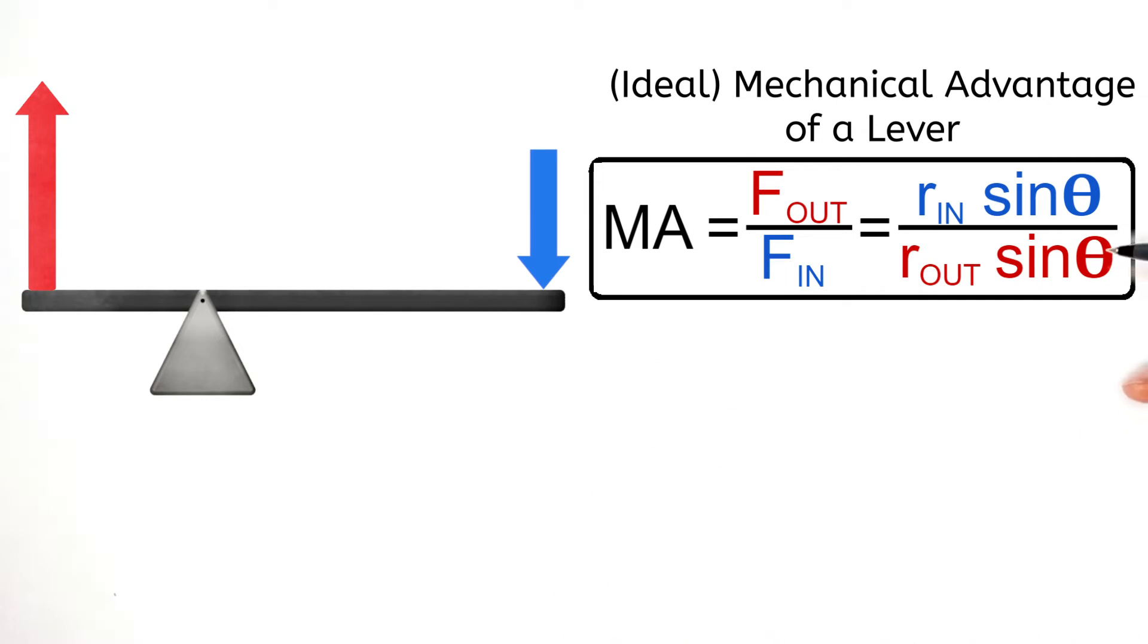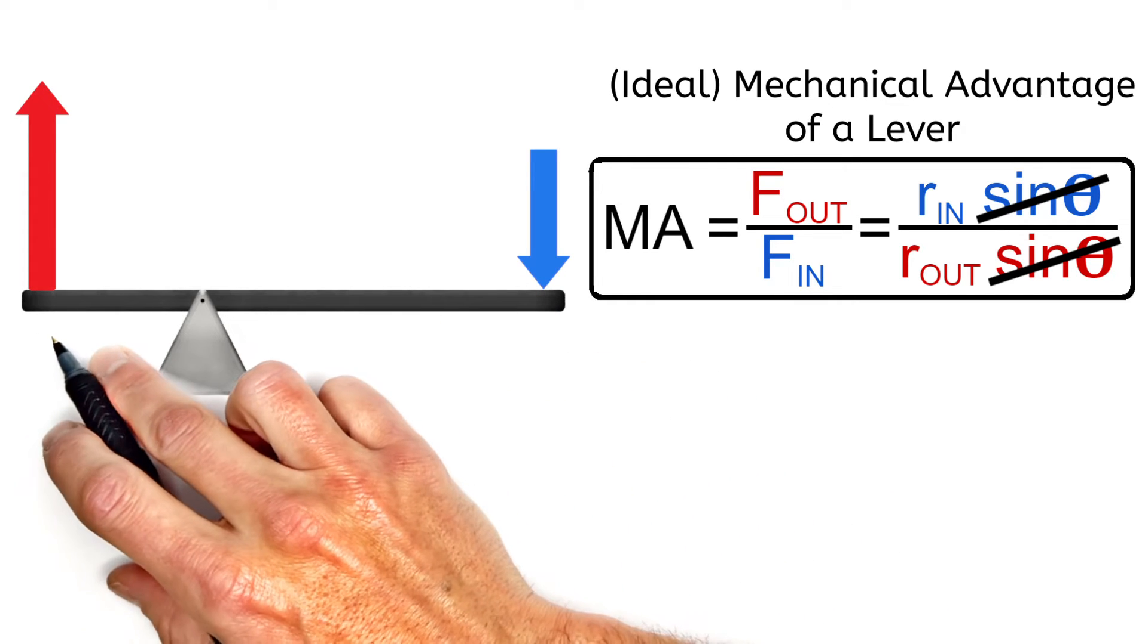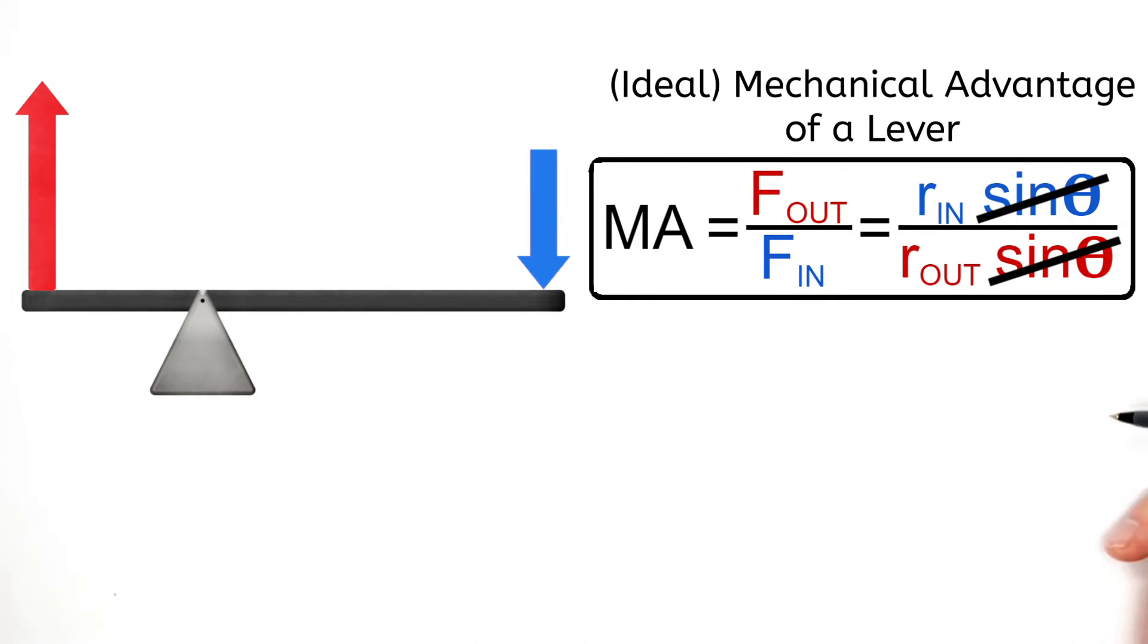Now looking at this equation, as long as the two angles are the same, these two sine terms cancel out, and we have the typical equation for mechanical advantage. But if either of these forces are at some other angle, we have to leave these terms in.